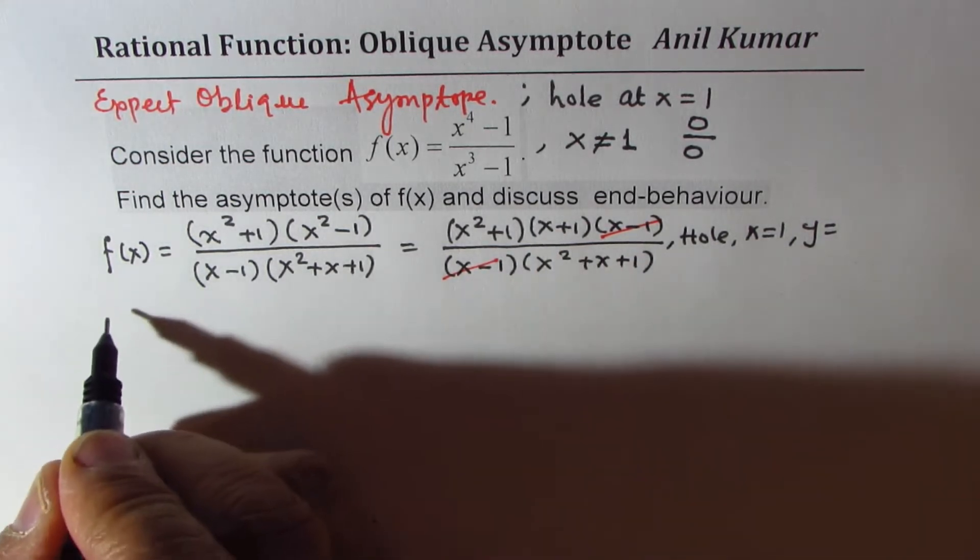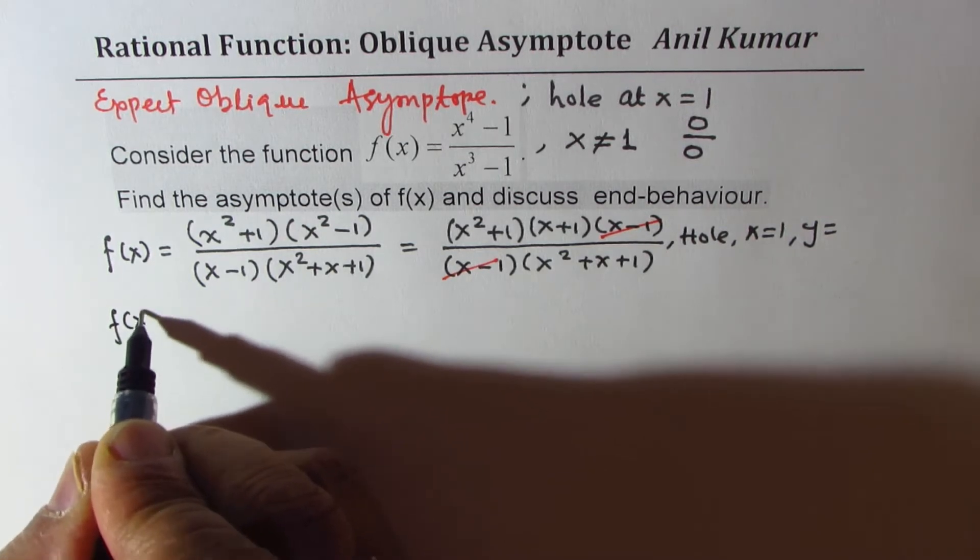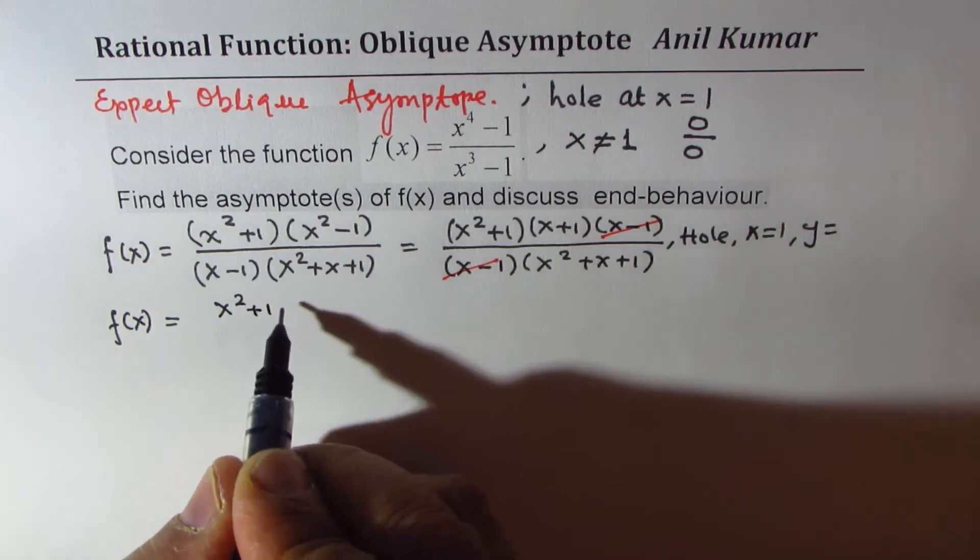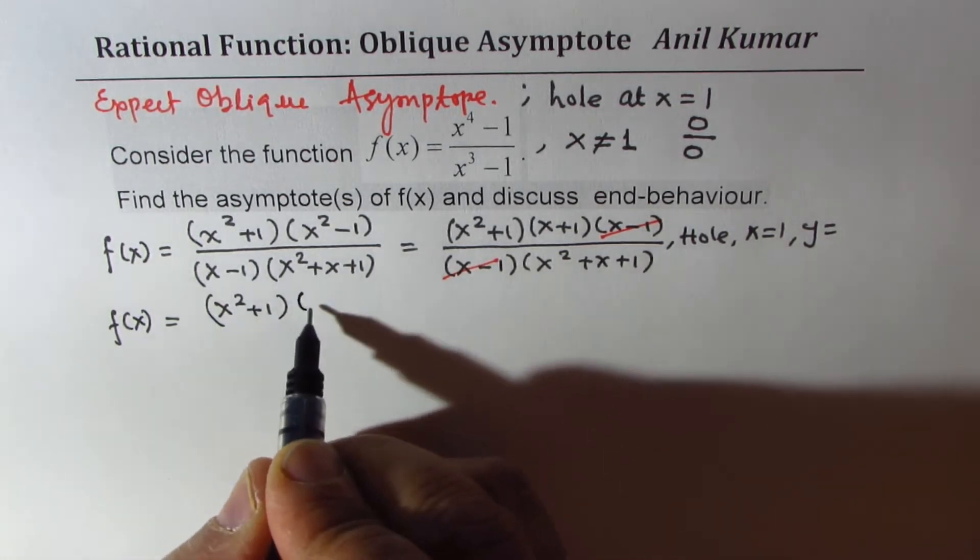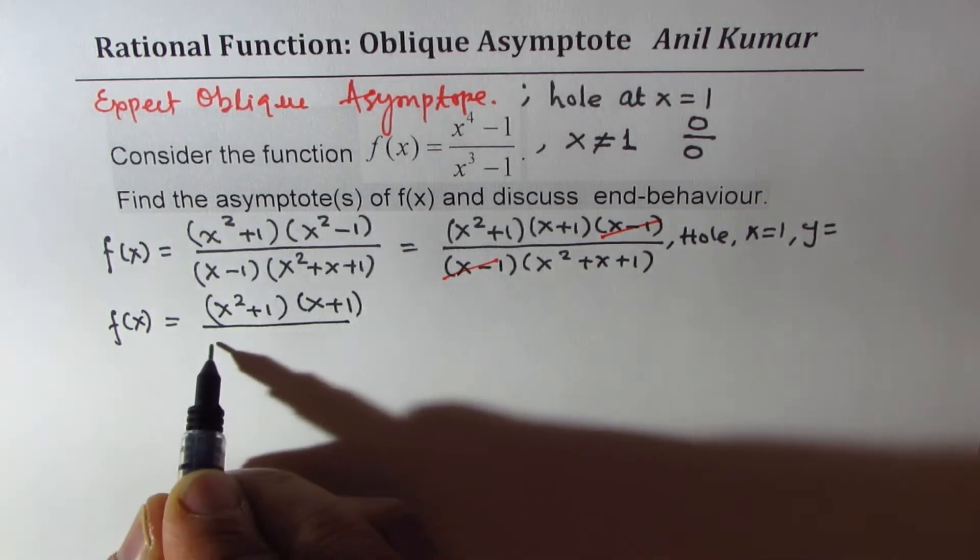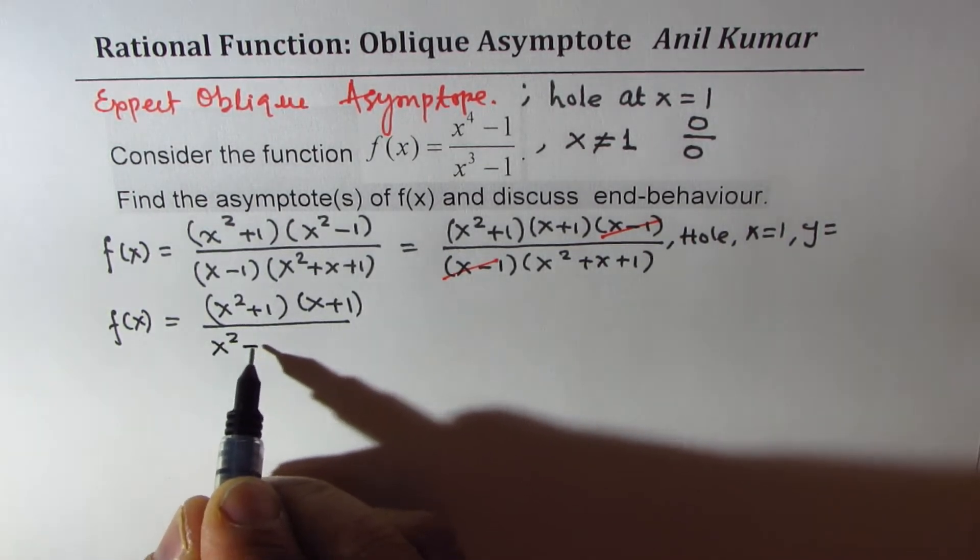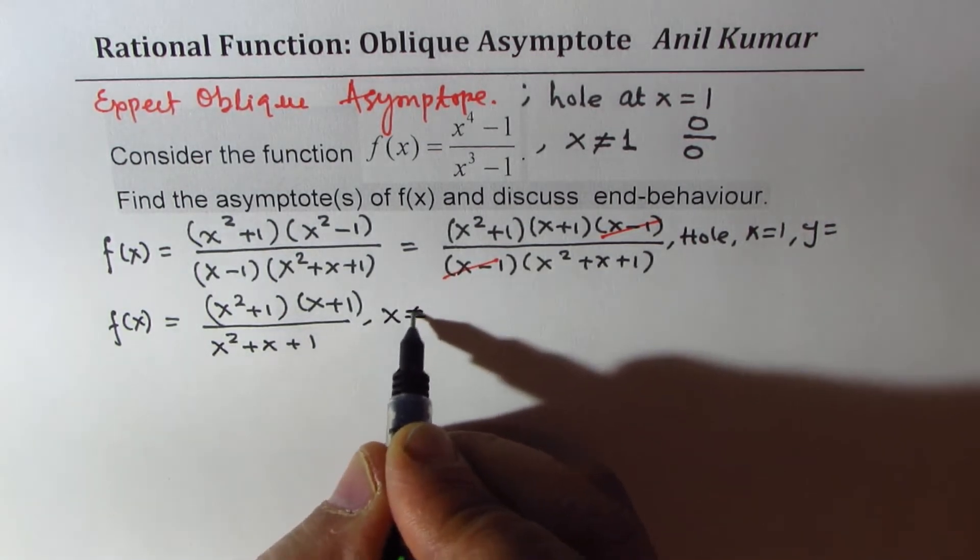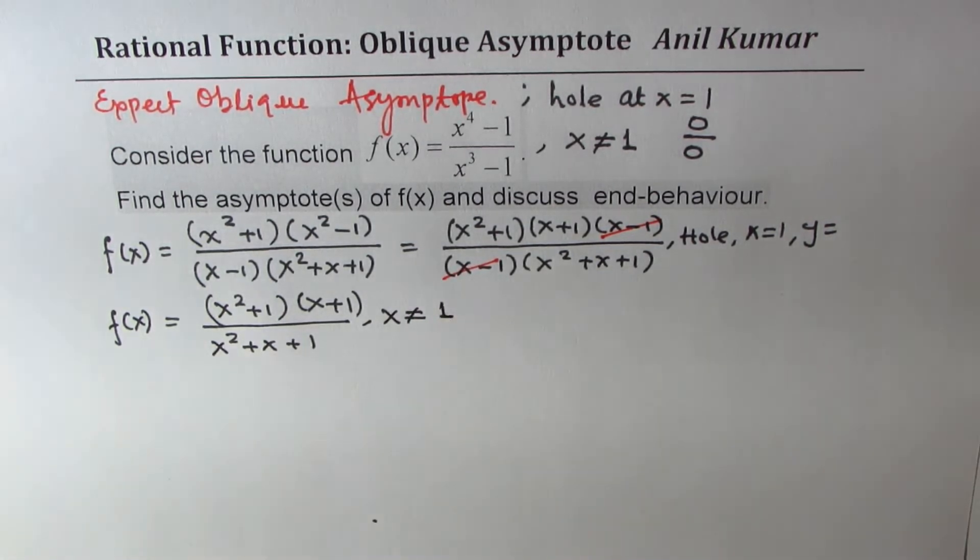So what we get here, let me rewrite this function. f(x) will be equal to x squared plus 1 times x plus 1 divided by x squared plus x plus 1. Now obviously, here x is not equal to 1.